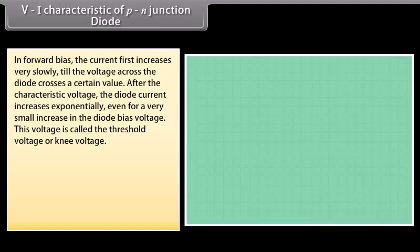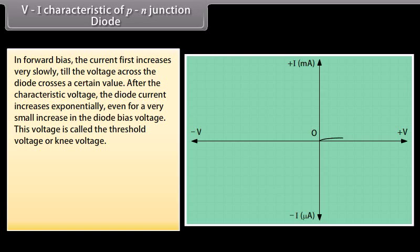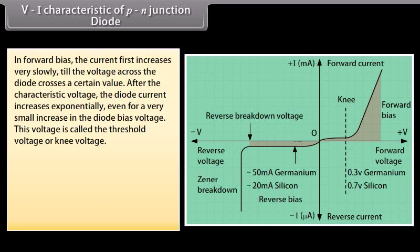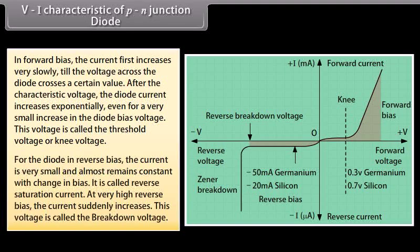In forward bias, the current first increases very slowly until the voltage across the diode crosses a certain value. After this characteristic voltage, the diode current increases exponentially even for a very small increase in bias voltage. This voltage is called the threshold voltage or knee voltage. For the diode in reverse bias, the current is very small and almost remains constant with change in bias — it is called reverse saturation current. At very high reverse bias, the current suddenly increases; this voltage is called the breakdown voltage.